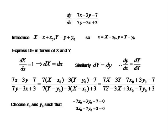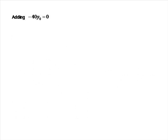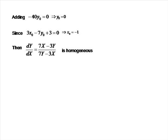For example, let's multiply the top equation by 3 and the bottom equation by 7, then add them together so the x₀ terms cancel. That leaves us with minus 40 times y₀ equals 0, meaning y₀ must be 0. Substituting y₀ back into the second equation, we find that x₀ equals minus 1. This means we've reduced the differential equation to dY/dX equals 7X minus 3Y all over 7Y minus 3X, which is now a homogeneous equation.